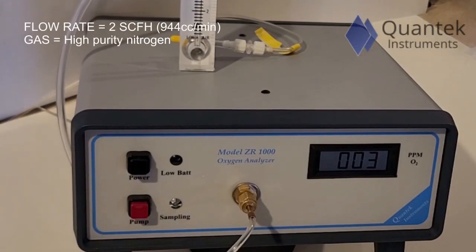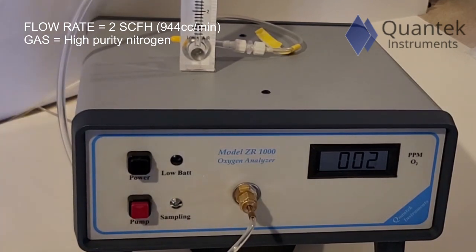And finally, we'll flow high-purity nitrogen through the instrument at 944 cc's per minute. As you can see, we reach the expected value of zero to 2 ppm.